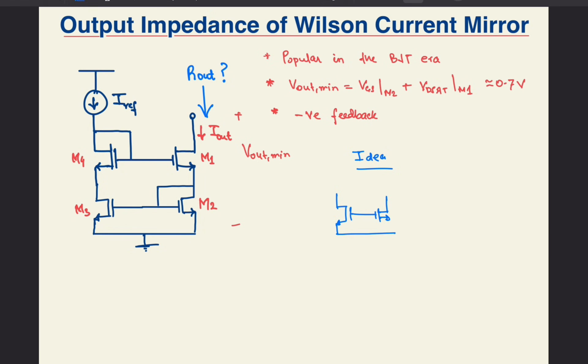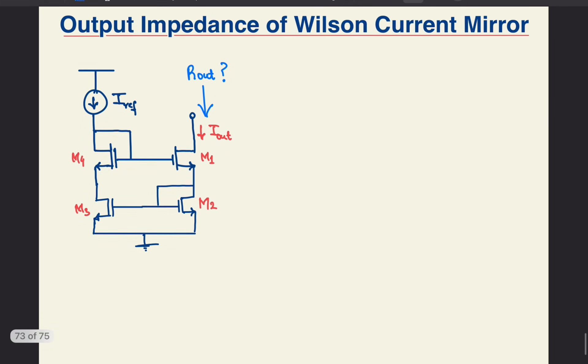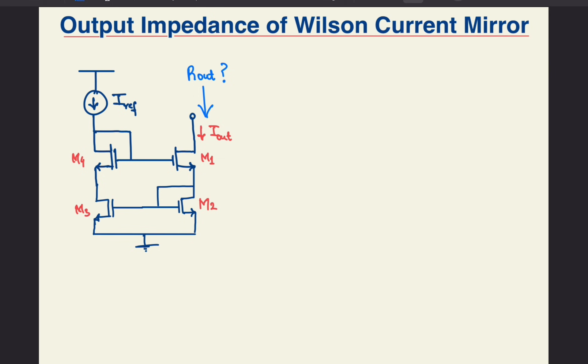VGS is generally made the same by tying the gates together, and the cascodes serve the purpose of equalizing the drain voltages for both the primary current mirroring transistors. In the Wilson current mirror, suppose that the drain voltage of M2 increases above that of M1.